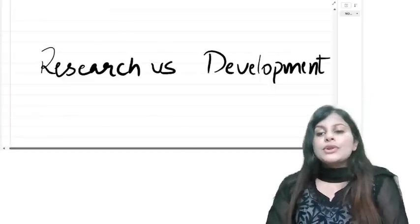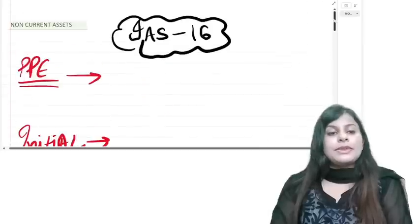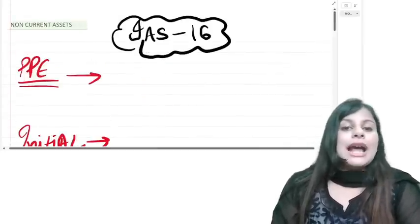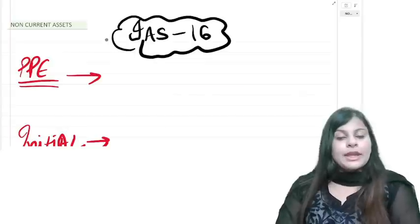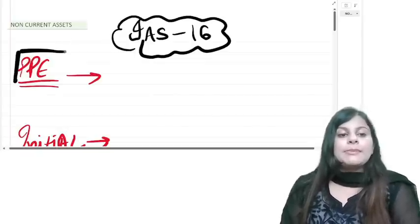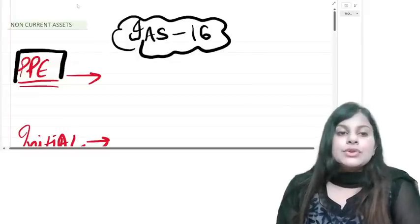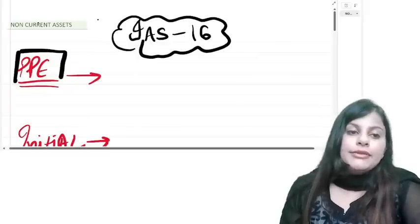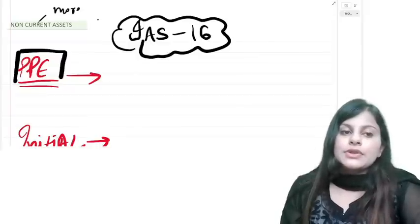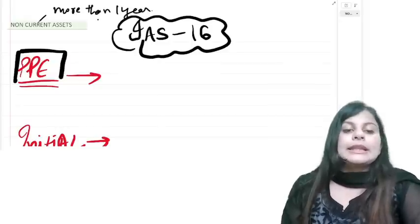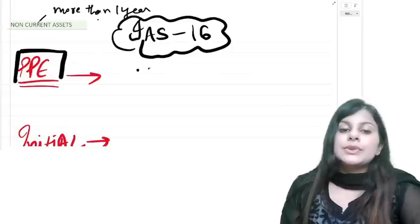Let's move to IAS 16, property, plant and equipment. PPE is anything held for more than one year — a non-current asset. The definition includes assets used in the manufacturing process, used for administration purposes like offices, or owner-occupied property that has also been rented out. For example, if an owner stays on the ground floor and rents upper floors, that is IAS 16 PPE.